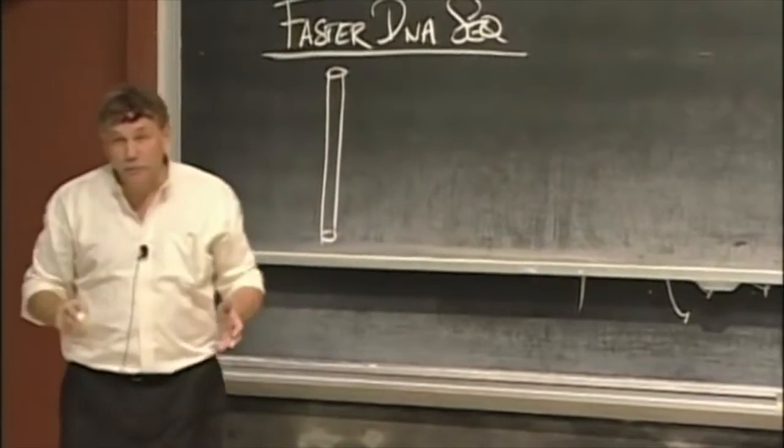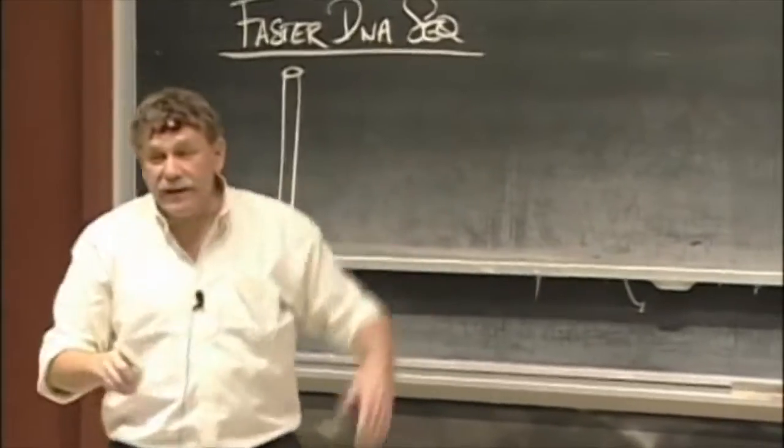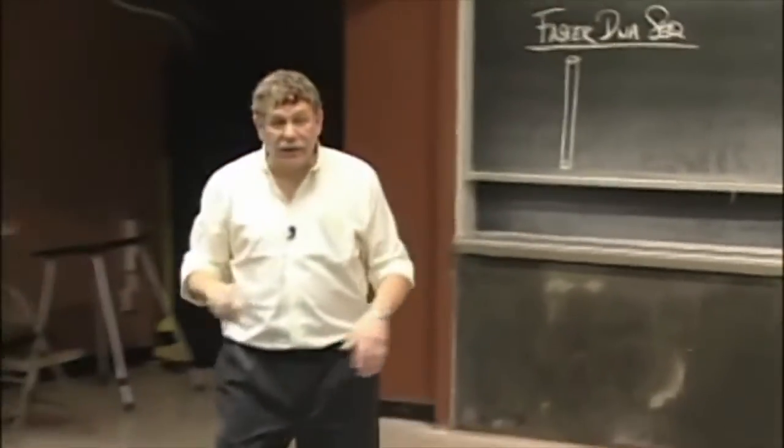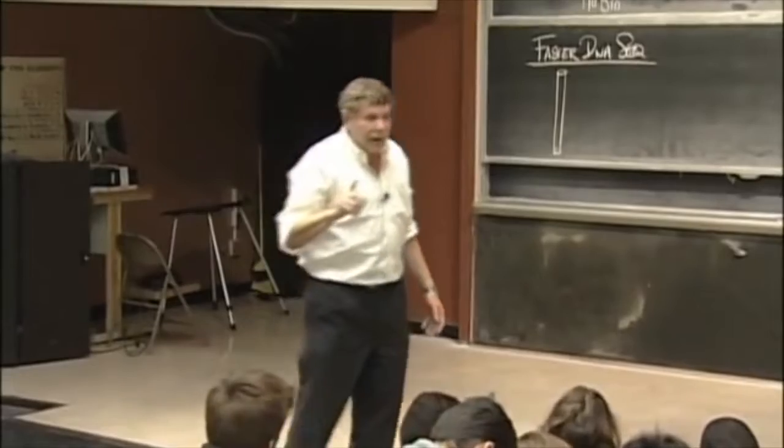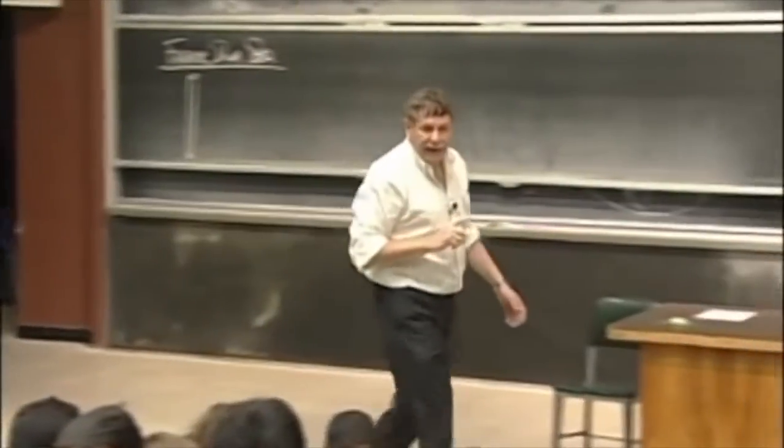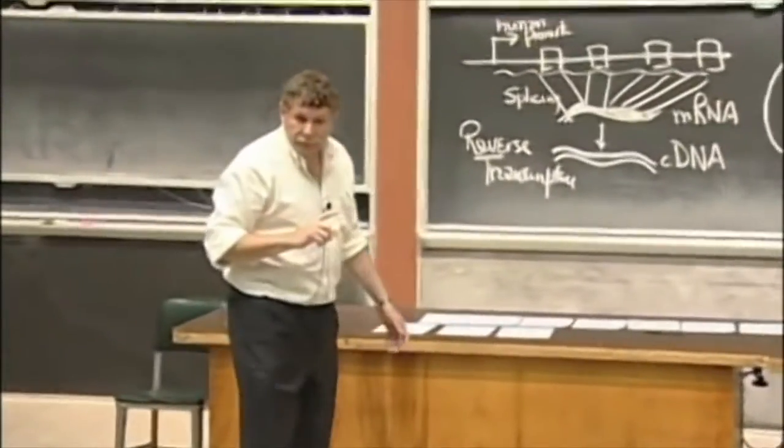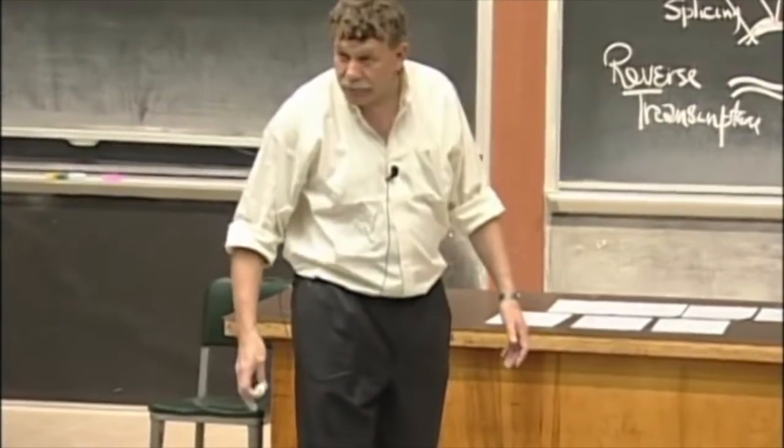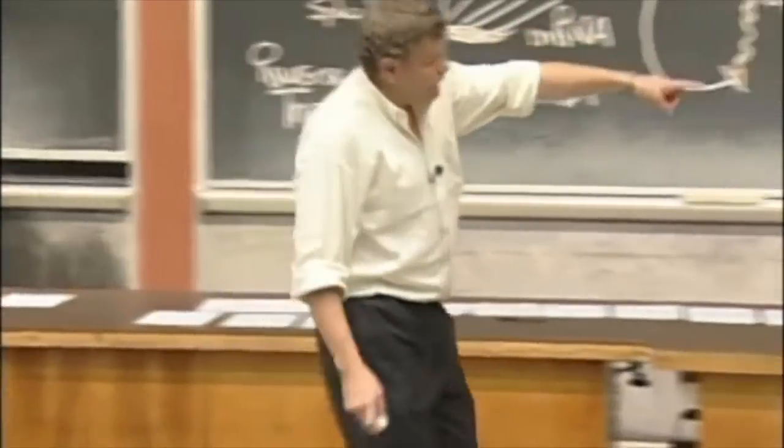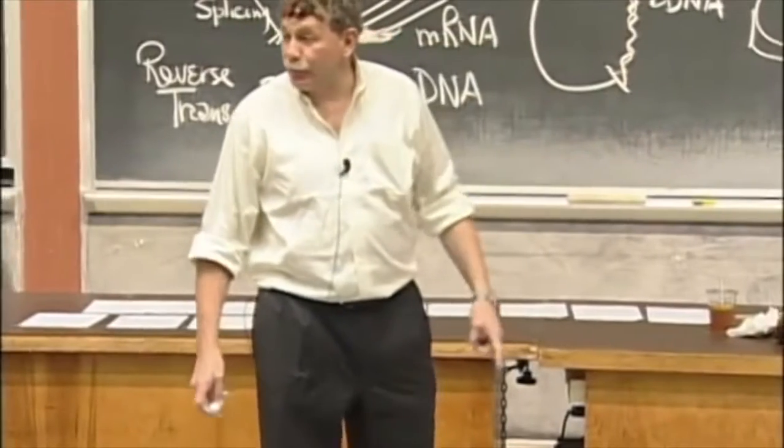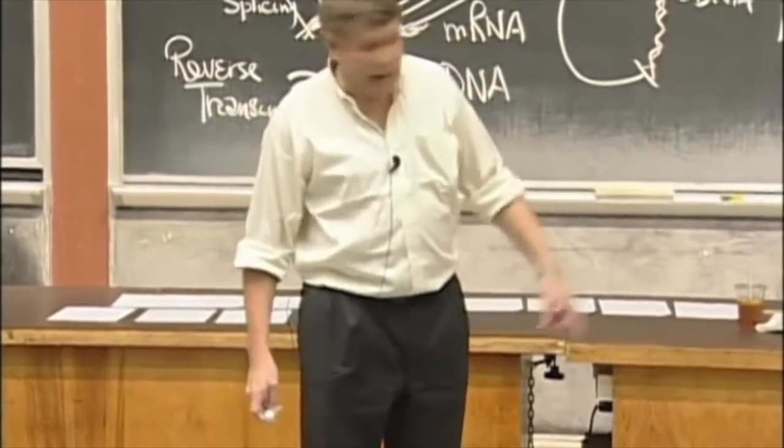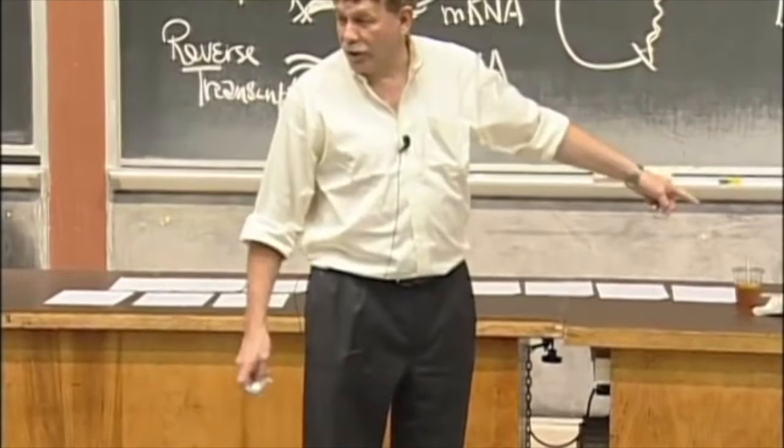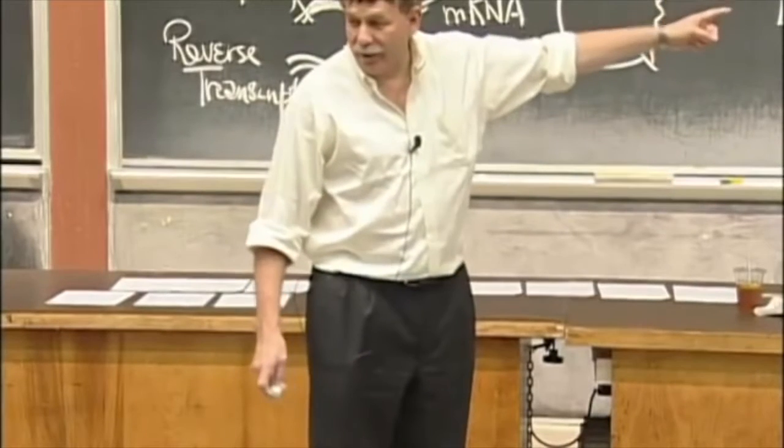What people did, which is very cool, was they simply took the A's, T's, C's, and G's, the defective ones, and attached a colored dye to each one. The A's were green and the T's were blue and the G's were red. Now when I run it out, I can do it with fluorescence and I can see the T's all glow one color and the A's glow another color.